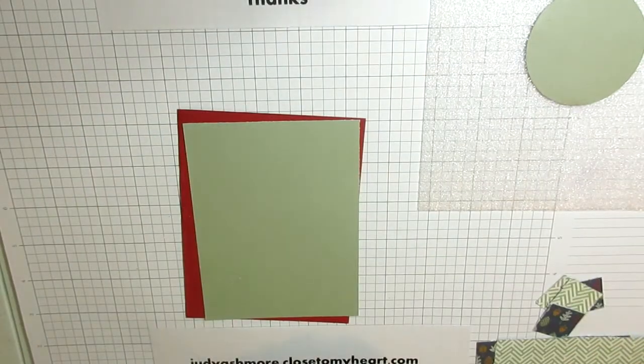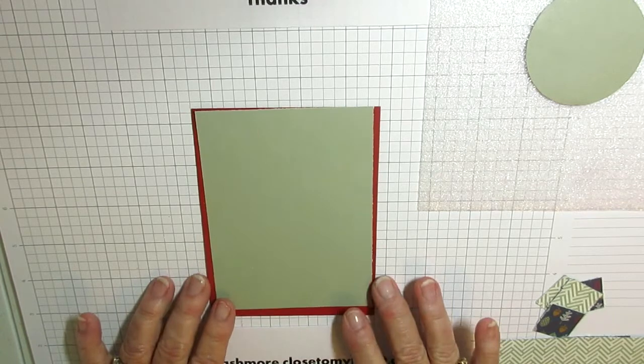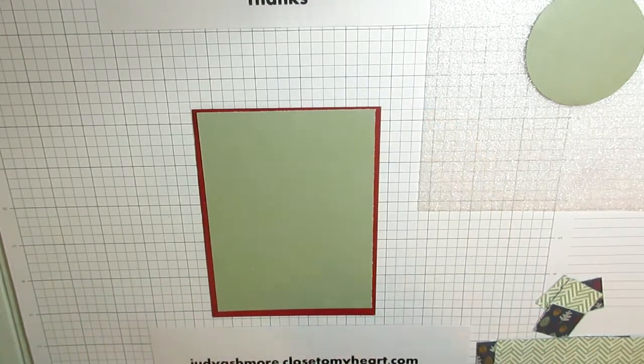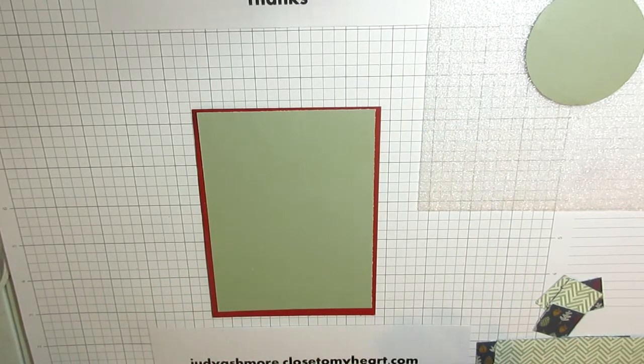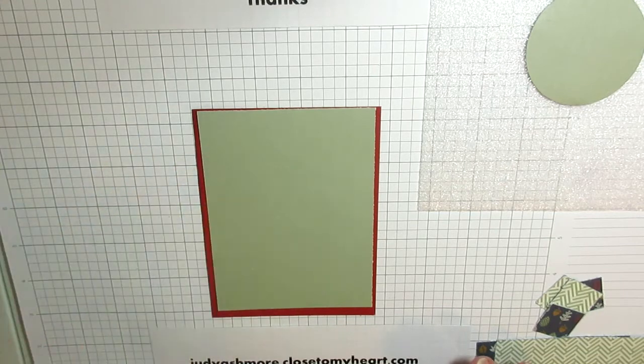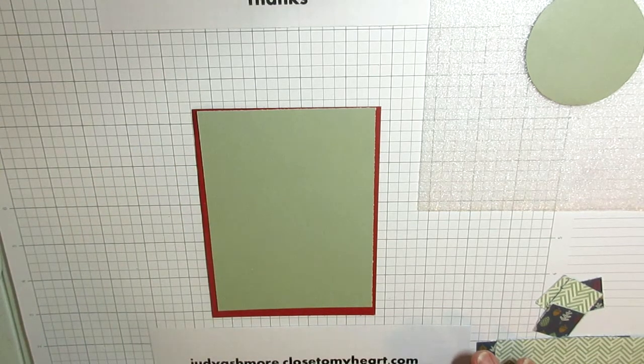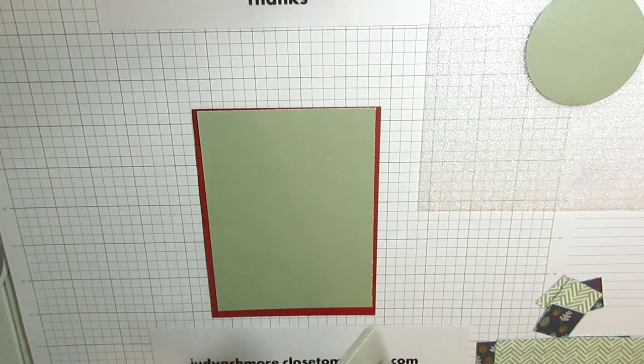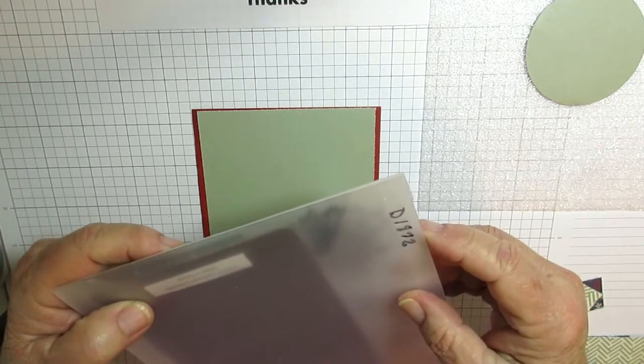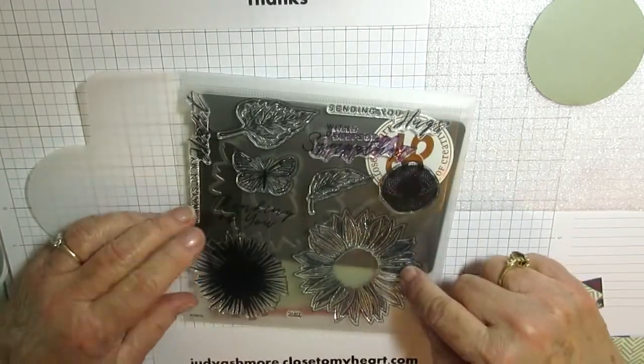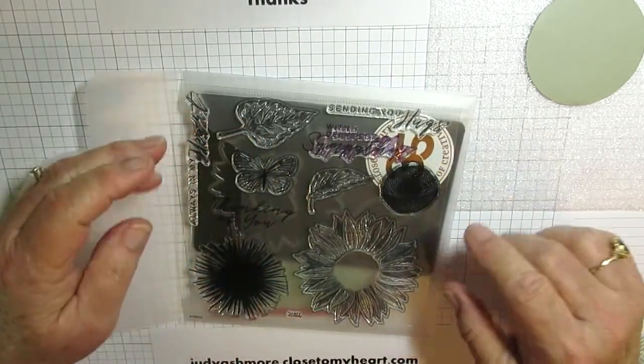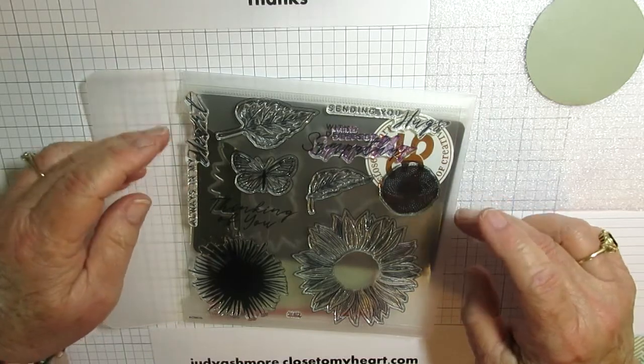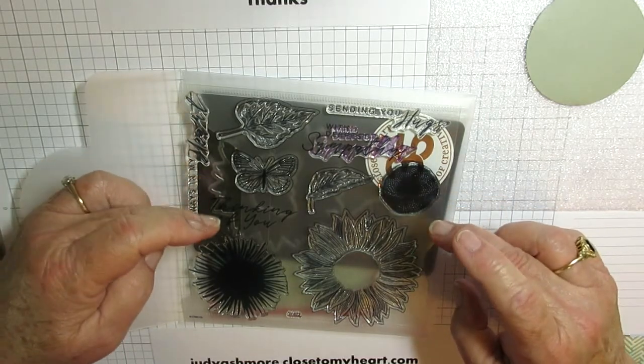But this morning I'm going to use some Hawthorne paper from Close to My Heart. I'm going to use some of their light gray ribbon. I'm also going to use a sentiment from D1872, which is sunflower, butterfly, leaves, and it has four different sentiments on it.